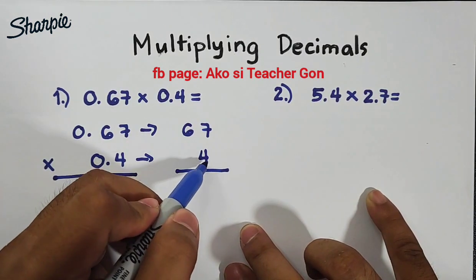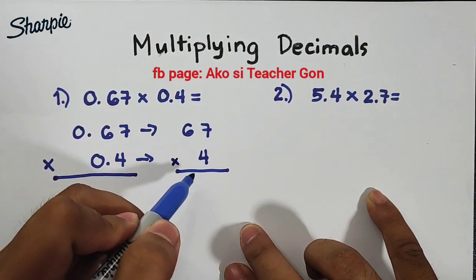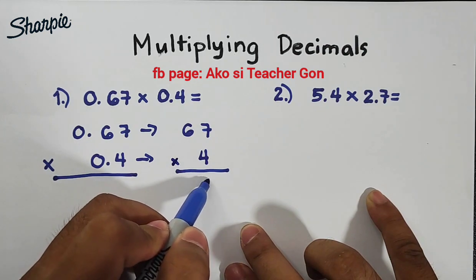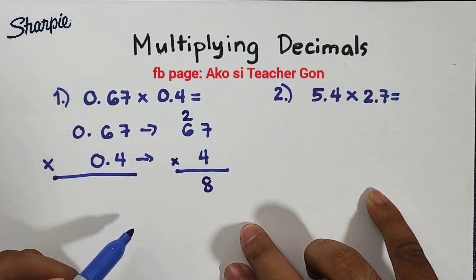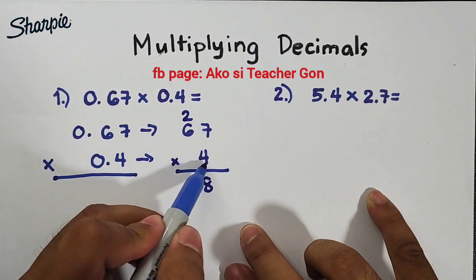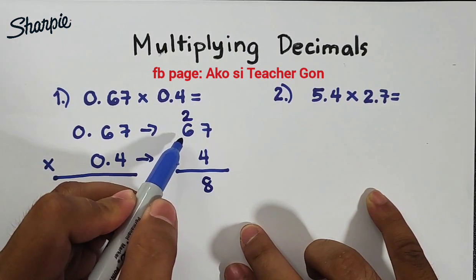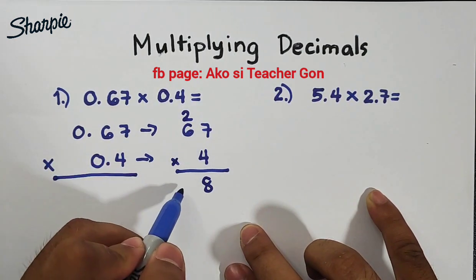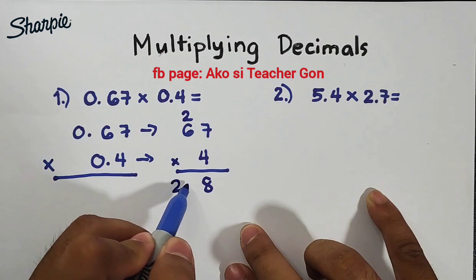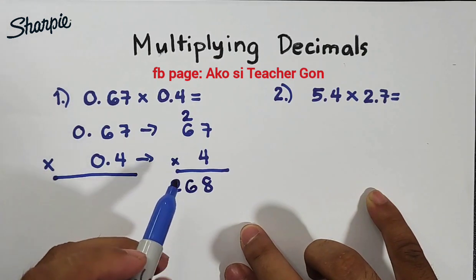So what's next? We have 4 times 7, that is equal to 28. We have your 8 and carry 2. Next, 4 times 6 which is equal to 24 plus 2, that is equal to 26. Now this is not the final answer.